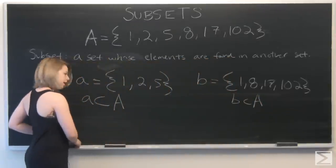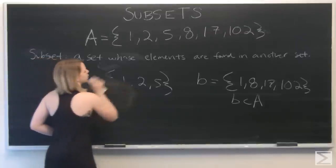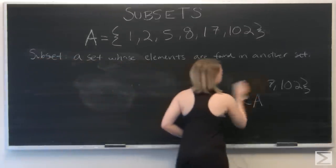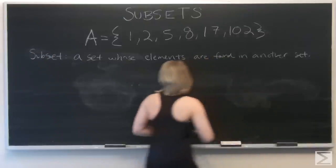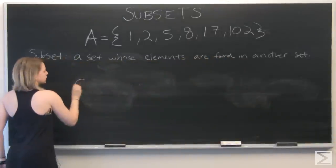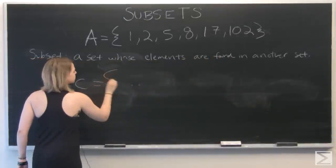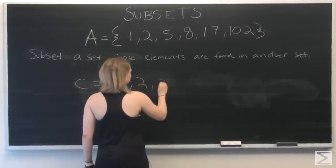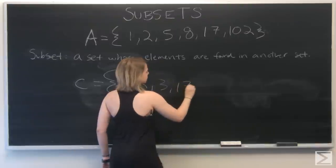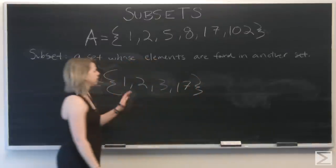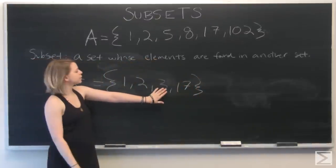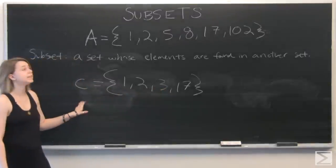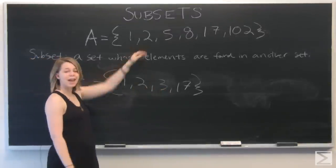Now let's look at another subset. We can do C. C is equal to 1, 2, 3, 17. Here, it's pretty obvious. We've got a 3 in our set C, and 3 is not found in A.